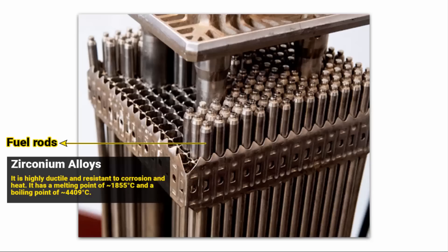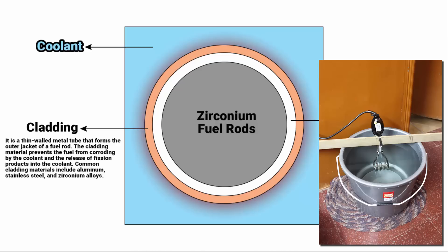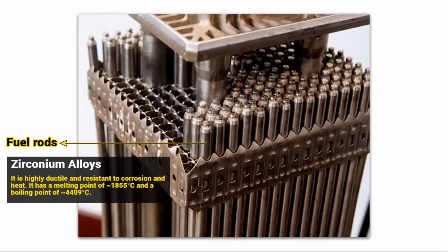The fuel rods are designed to withstand high temperatures and pressures within the reactor core while allowing efficient heat transfer from the nuclear reactions to the surrounding coolant. It is similar to having water heating rods. You submerge the rod, it heats up and in turn heats the water. Similarly, these fuel rods heat up and warm the coolant.